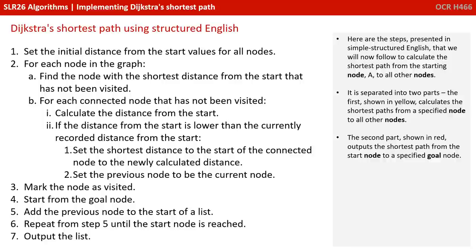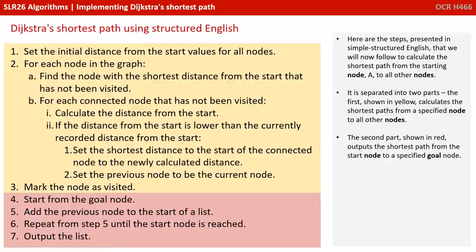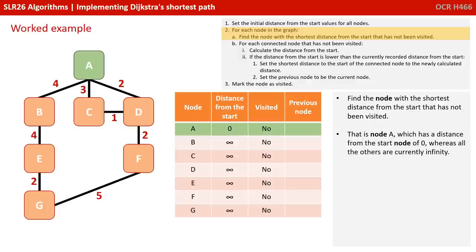Here are the steps in simple structured English that we will follow to calculate the shortest path from the starting node A to all other nodes. It's separated into two parts: the first, shown in yellow, calculates the shortest path from a specified node to all others, and the second, shown in red, outputs the shortest path from the start node to a specified goal node.